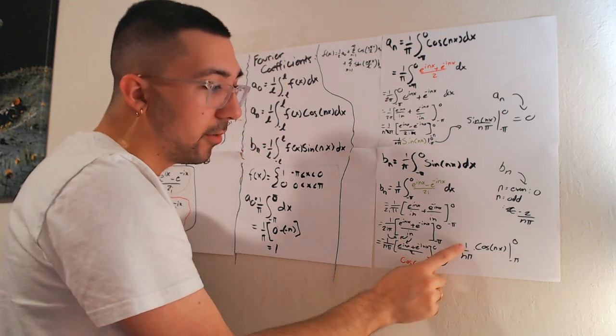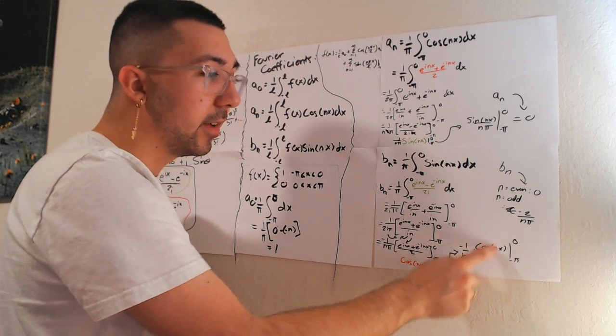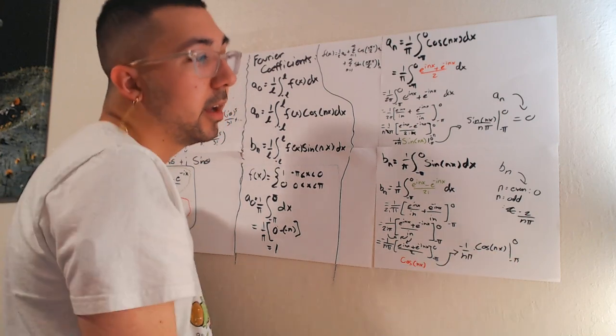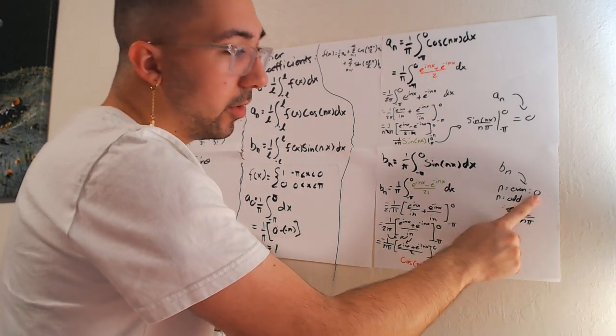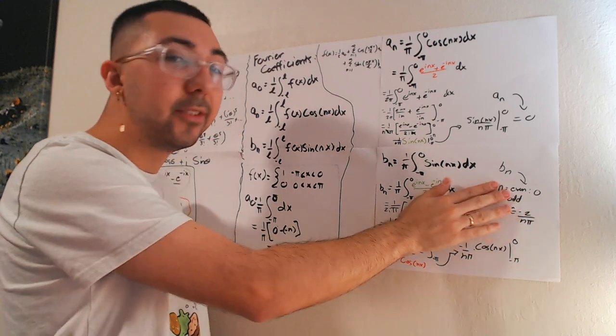And so we're going to actually have minus 1 over n pi times cosine of nx from negative pi to 0, and that's what happens when we do the integral out. And we're going to find that b sub n is actually both 0 and minus 2 over n pi, depending on whether or not n is even or odd.